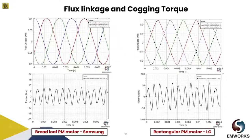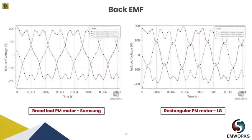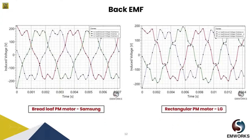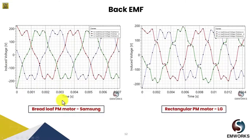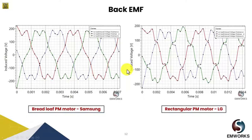Moving ahead, we have the back EMF. The back EMF in both cases is almost the same in shape. But even if we do proper THD analysis, we can see that the Breidloff PM motor will have lesser harmonic content in its back EMF due to its shaping, which eliminates harmonics due to the slotting effect. Overall, we obtained the induced back EMF voltage almost the same for both cases.